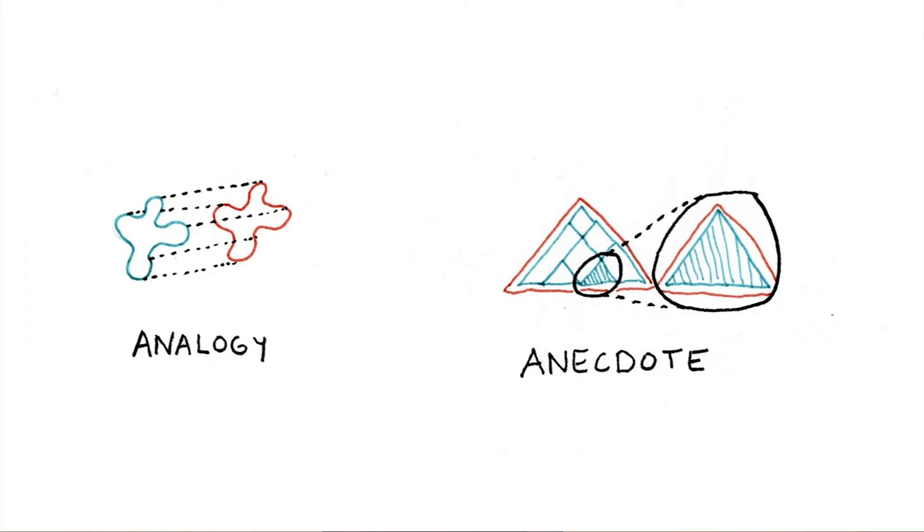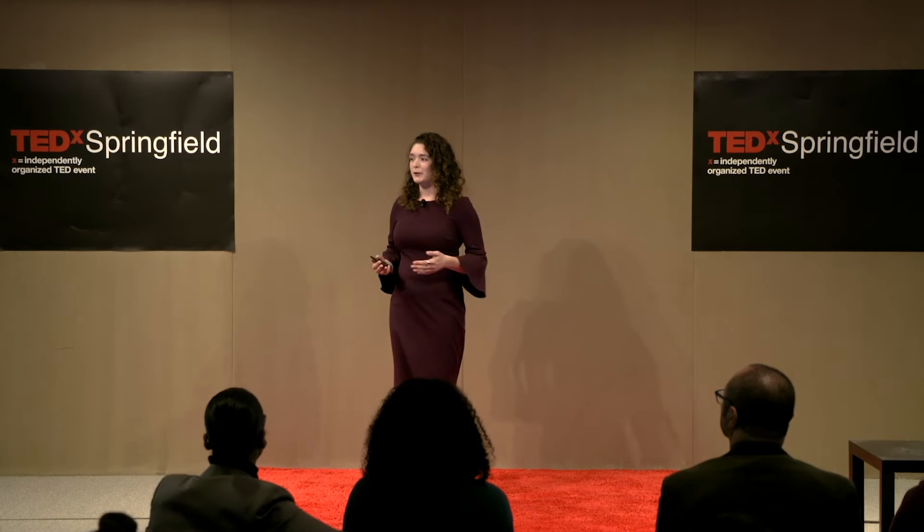Anecdotes are also helpful for explaining abstract ideas. Think about the classic story of the apple falling on Isaac Newton's head as a way to understand how gravity functions in the world around us.